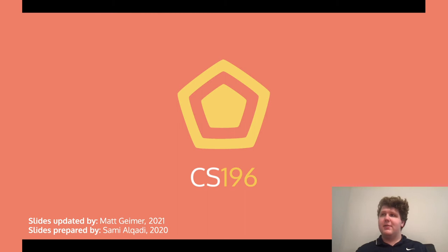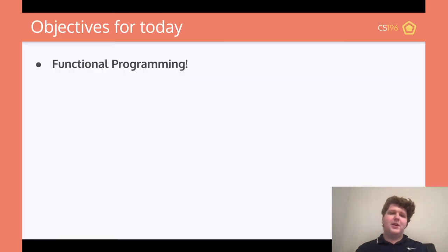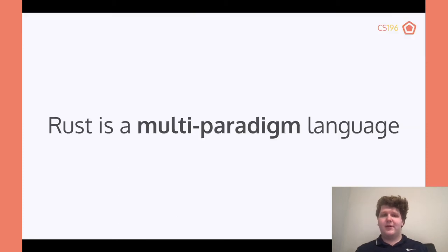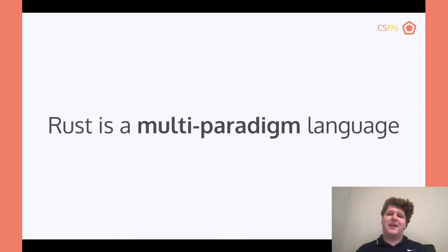Today we're going to be talking about functional Rust. So what is functional programming and why is it something that we have in Rust? Well, Rust is a multi-paradigm language, meaning it's not just one way of programming.